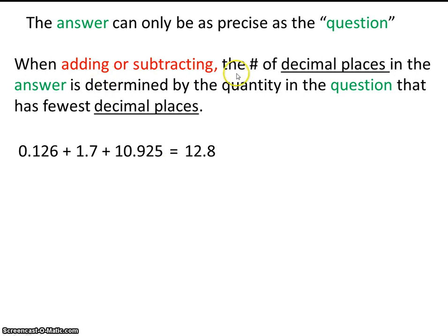So once again, when adding or subtracting, the number of decimal places in the answer, so that's here, we have one decimal place in the tenths place. It's determined by the quantity, these are the quantities in the question that have the fewest decimal places.